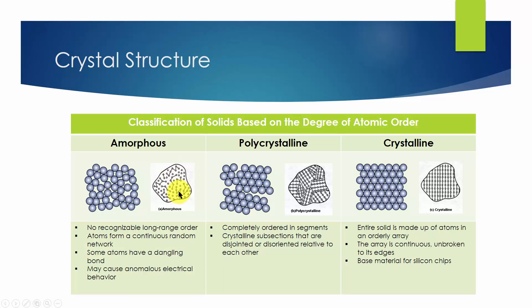Due to the disordered nature of the material, some atoms have a dangling bond. Physically, these dangling bonds represent defects in the continuous random network and may cause anomalous electrical behavior.